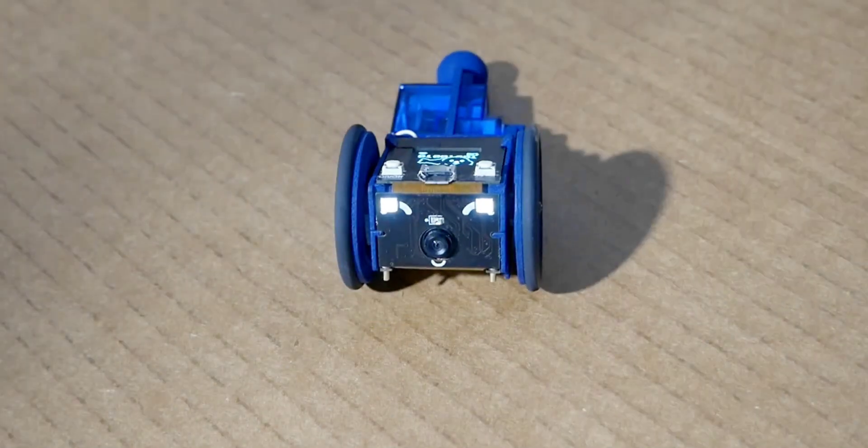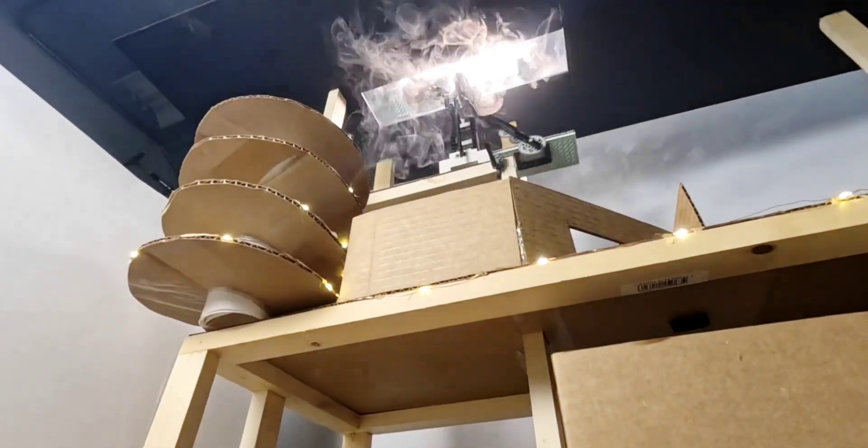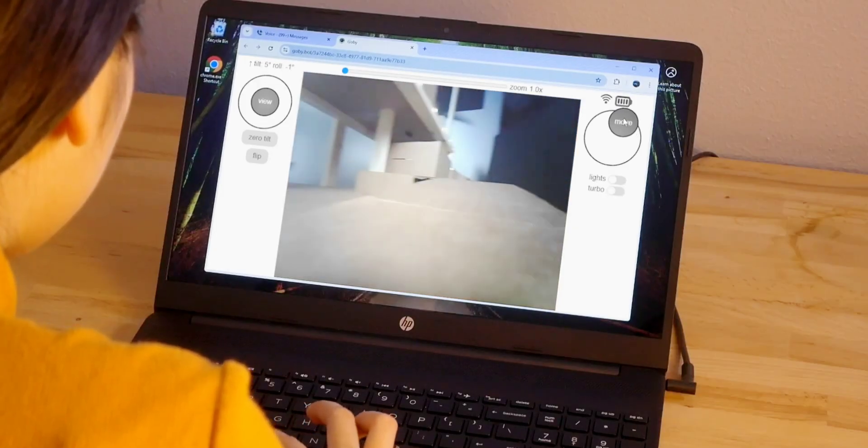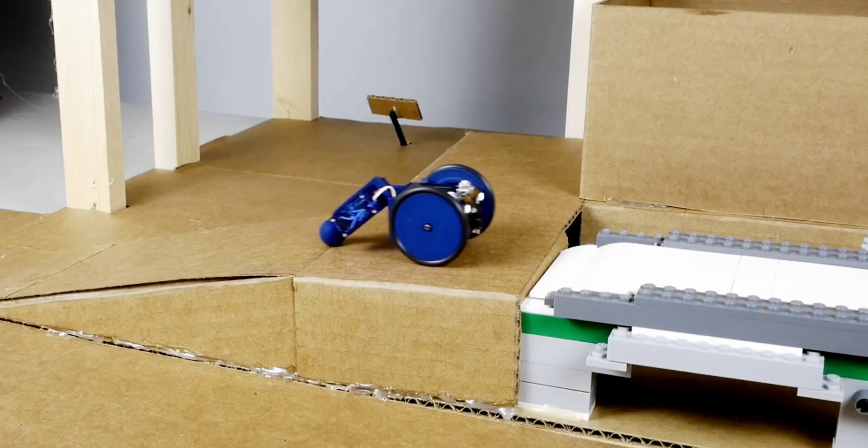One charge of the robot's lithium-ion battery is claimed to be good for about 1.5 hours of runtime. When the battery starts getting low, the robot will automatically park itself on an included charging pad.